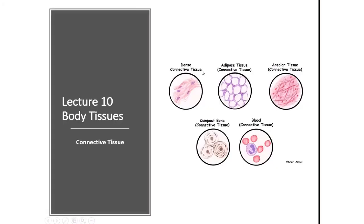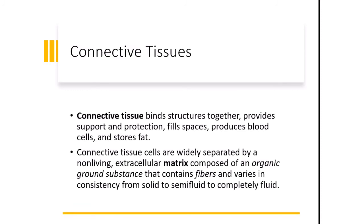Now we're going to talk about the different types of connective tissues. Think of connective tissue as filler and glue that binds everything together in the body — they provide support and protection, fill up space, and also produce blood cells and store fat. There are six different types. They contain living cells separated by a non-living extracellular matrix composed of organic ground substances. The fibers found in the matrix affect the consistency of the connective tissue — sometimes solid, sometimes semi-fluid, and sometimes completely fluid, as in the case of blood.